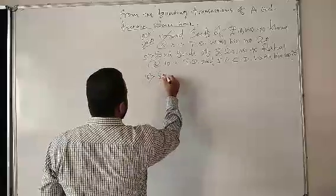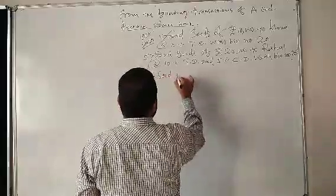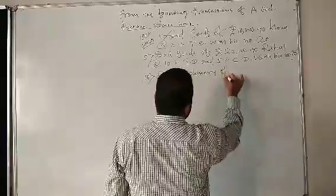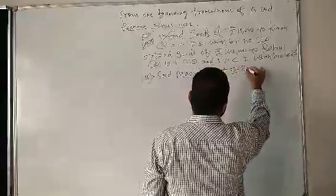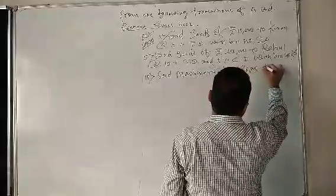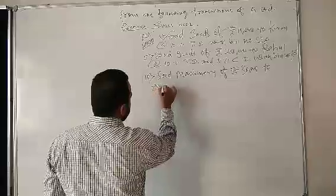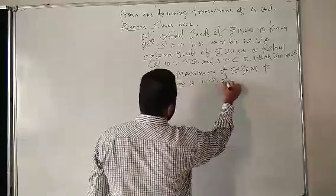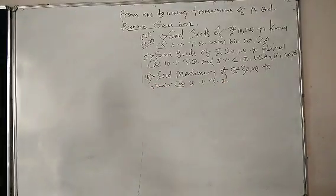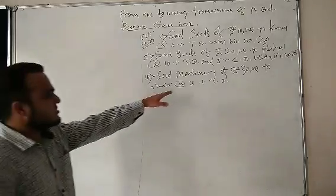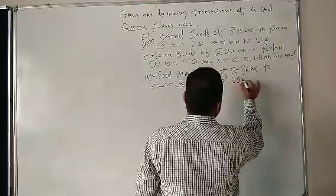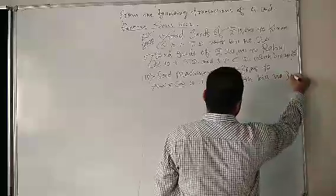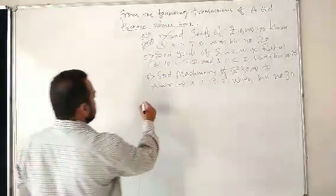Next transaction: Sold machinery of rupees 30,000 to Amir at 10 percent trade discount with bill number 30.